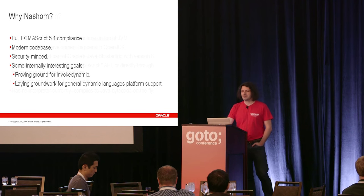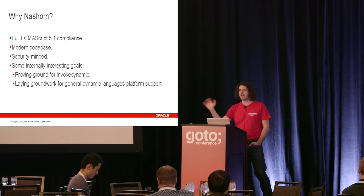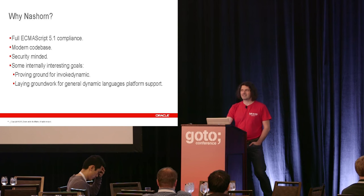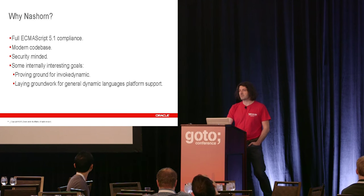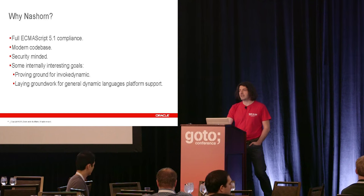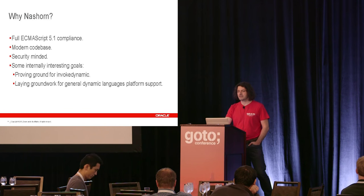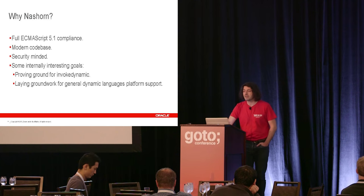Why would we even want to create Nashorn? Well, we wanted something that has full ECMAScript 5 compliance — so modern JavaScript — with a modern code base. We had Rhino before, but it was showing its age. One thing not often brought up is that it's also security-minded. Rhino was created before the Java 2 security model came into place. With Nashorn, since we ship it as an integrated part of the JDK, it has to be secured, and the internal architecture has to pay a lot of attention to all the intricacies of the Java security model.